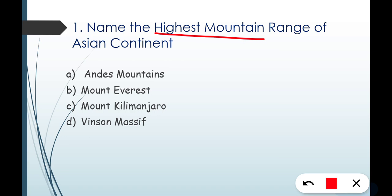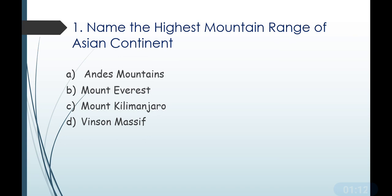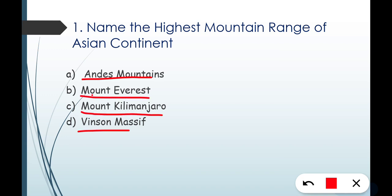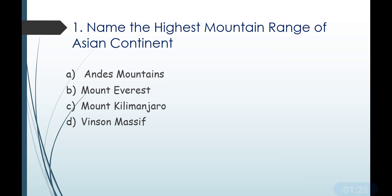The very first question: which is the highest mountain range of the Asian continent? Options are: Option A — Indies Mountains, Option B — Mount Everest, Option C — Mount Kilimanjaro, and Option D — Vinson Massif. If you read the word 'highest mountain,' the answer becomes clear. The correct answer is Option B, that is Mount Everest.